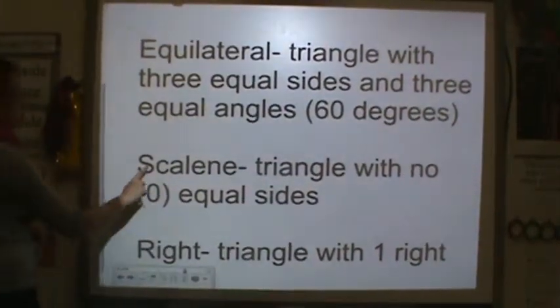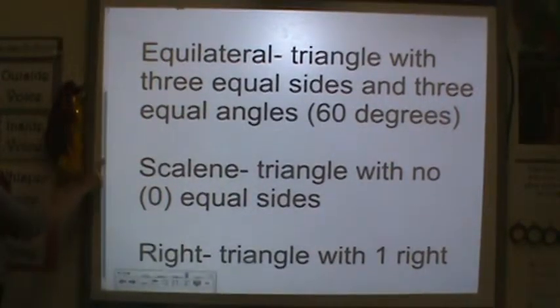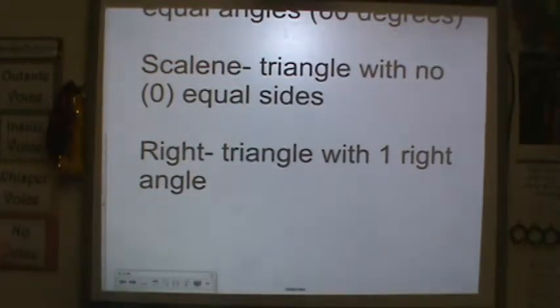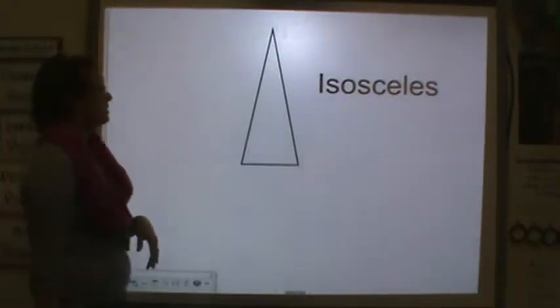A scalene is a triangle with no equal sides, so zero sides are the same length. And a right triangle is a triangle with one right angle. Okay, so be sure you got that down. If you need to pause, go ahead and do that.